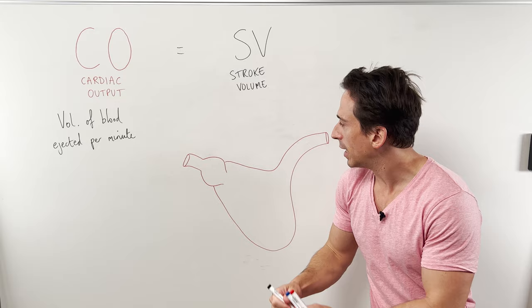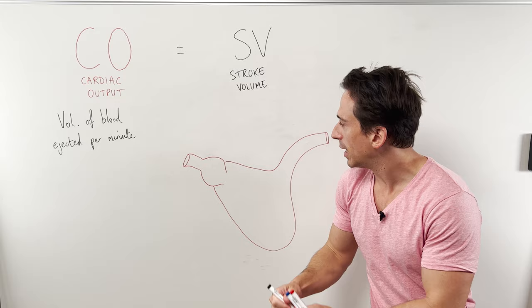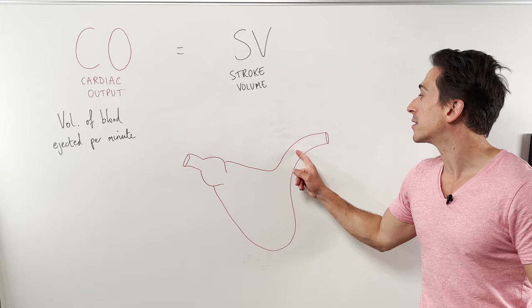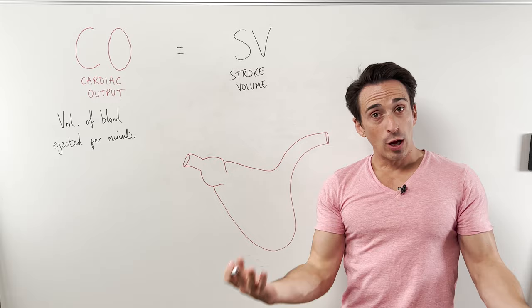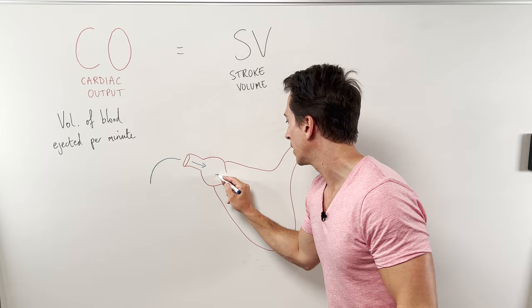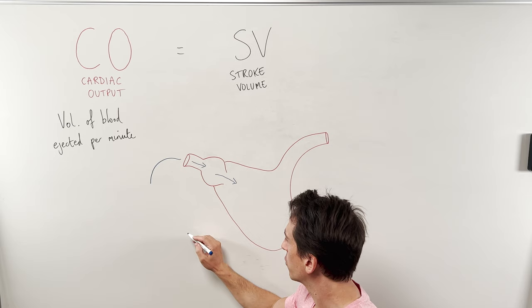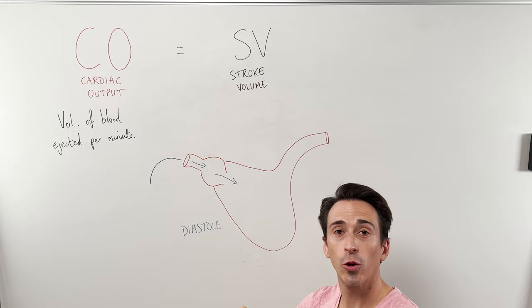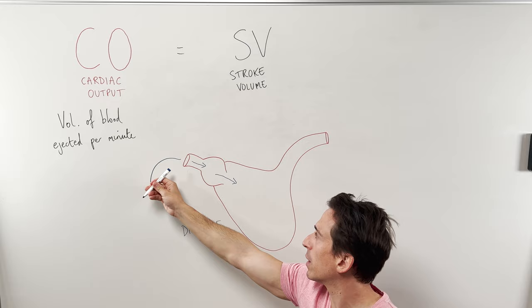Think about it like this: we have the left atrium, the left ventricle, and then that left ventricle leads out to the aorta. When your heart's at rest, it contracts, relaxes, contracts, relaxes. When it relaxes, this is the time that the heart fills with blood. This relaxation we call diastole — the heart is relaxing — and during diastole you've got venous return bringing blood back and filling the heart.